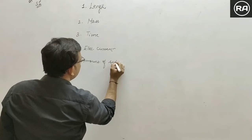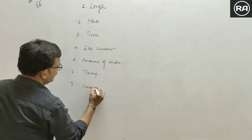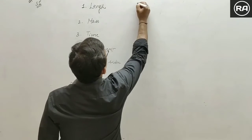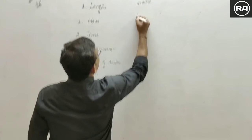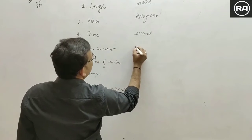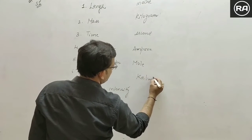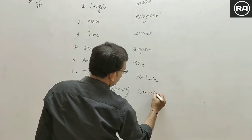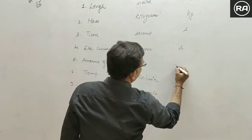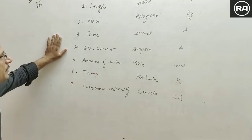Now we will write the respective SI units. For length it is meter (m), mass is kilogram (kg), time is second (s), electric current is ampere (A), amount of substance is mole (mol), temperature is kelvin (K), and luminous intensity is candela (cd). So these are the seven fundamental quantities present in the SI system.